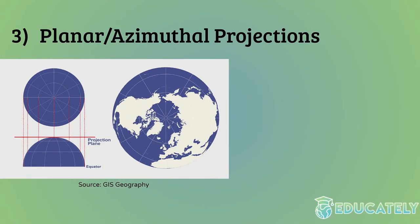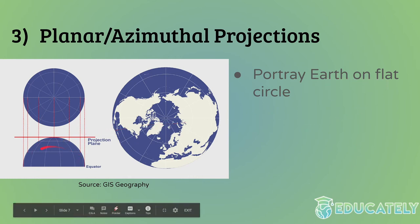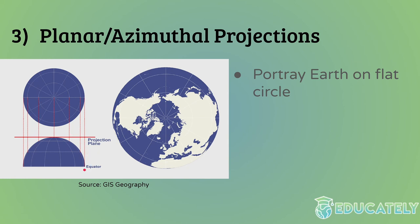Third, you have planar, or as a more scientific term, azimuthal projections. These are a bit more basic — they just portray the spherical Earth on a flat circle. So this is like the northern hemisphere of the spherical Earth being cast onto this flat plane. A plane is just a flat two-dimensional space in geometry, and everything is getting cast onto that.